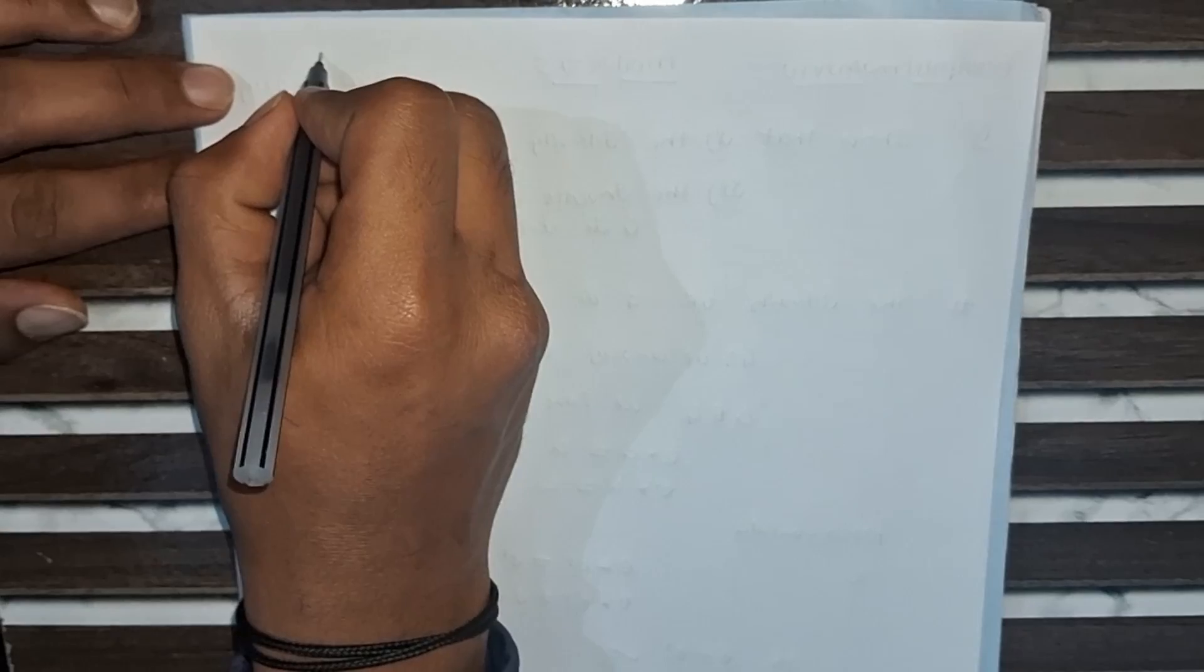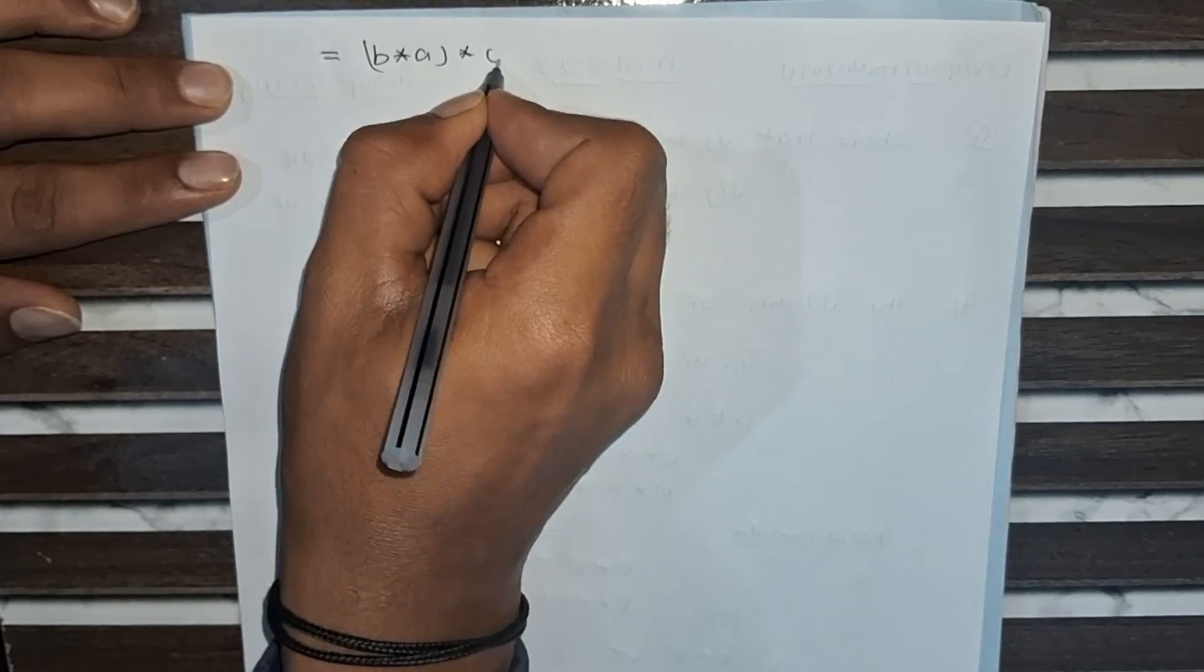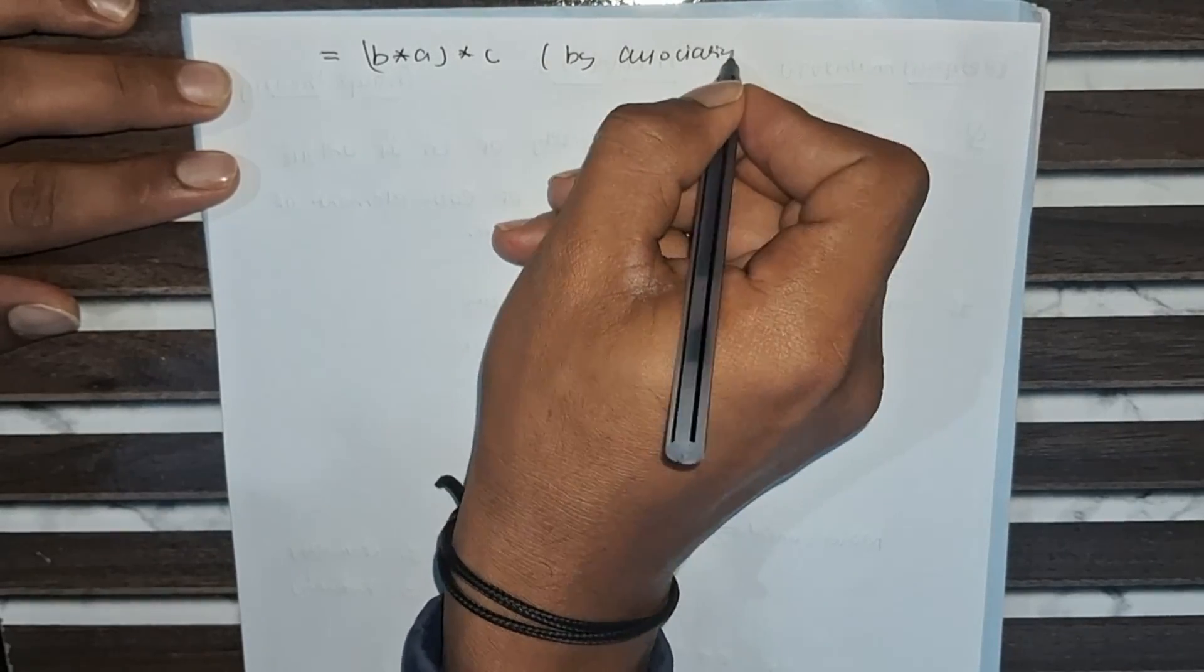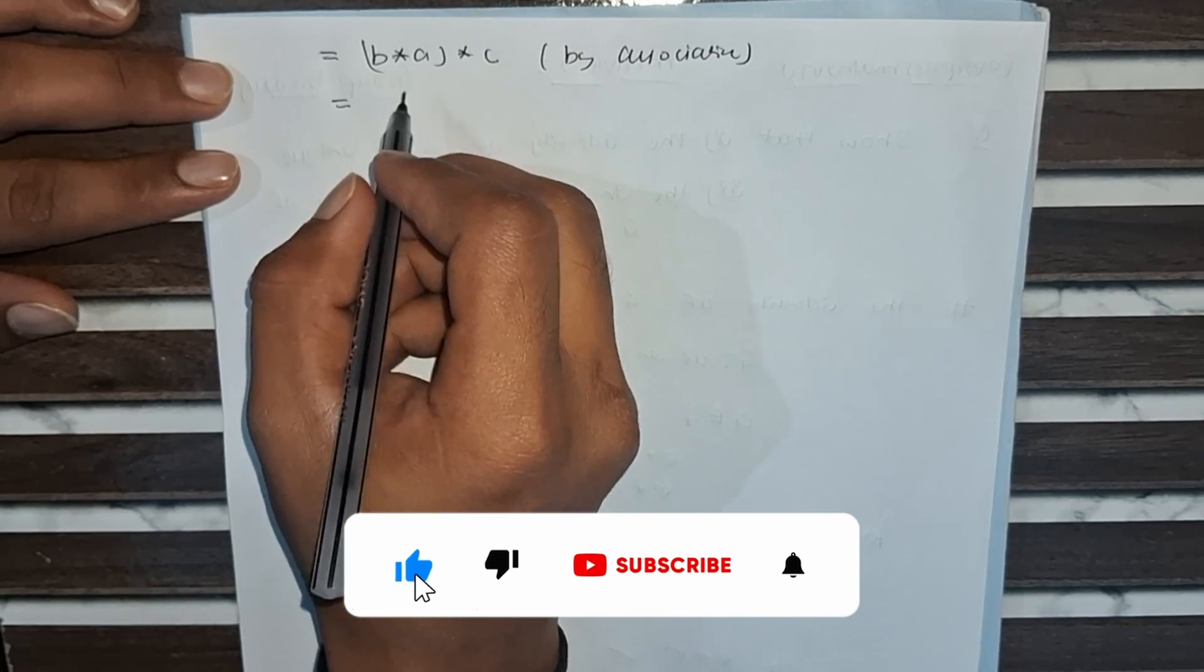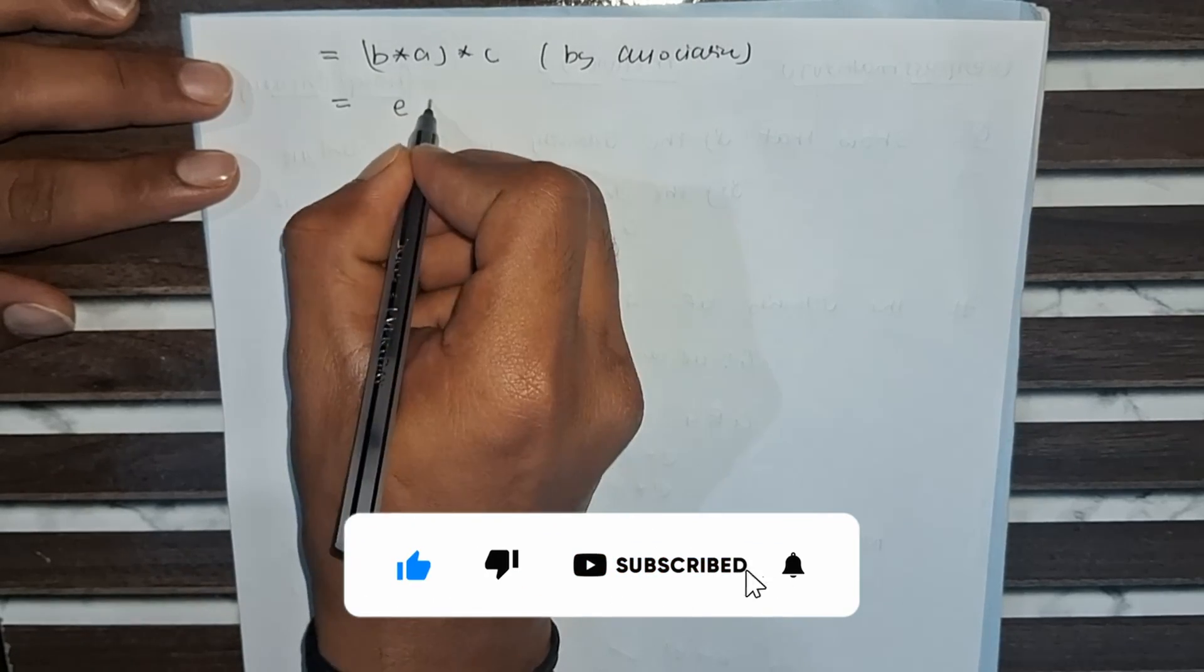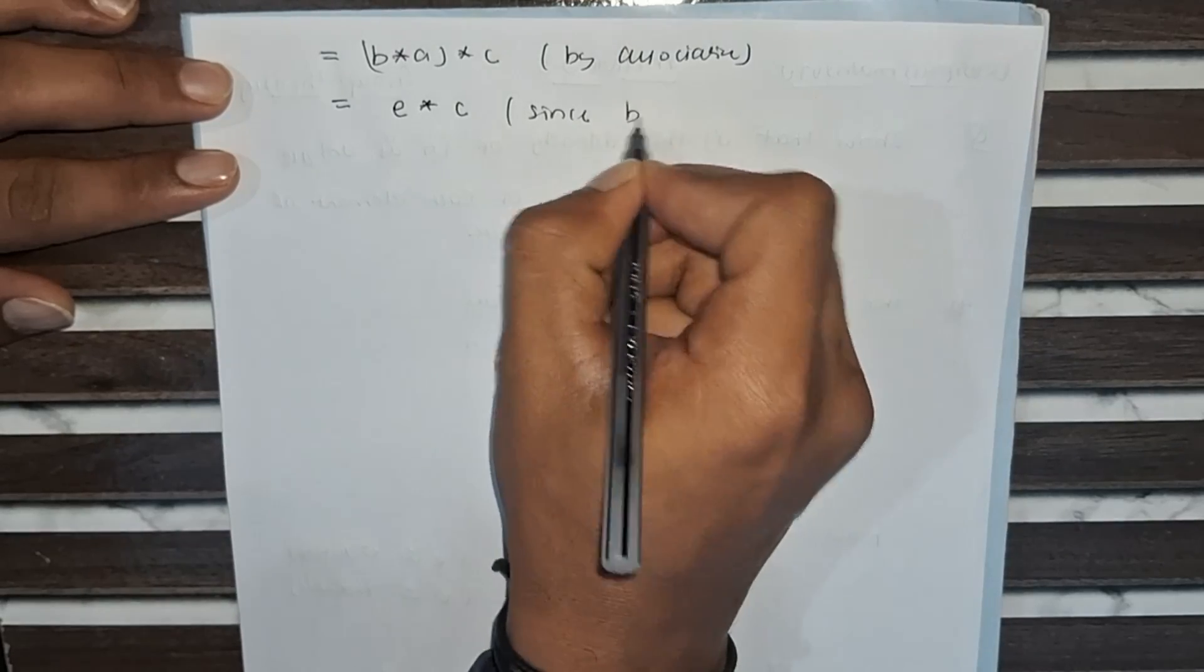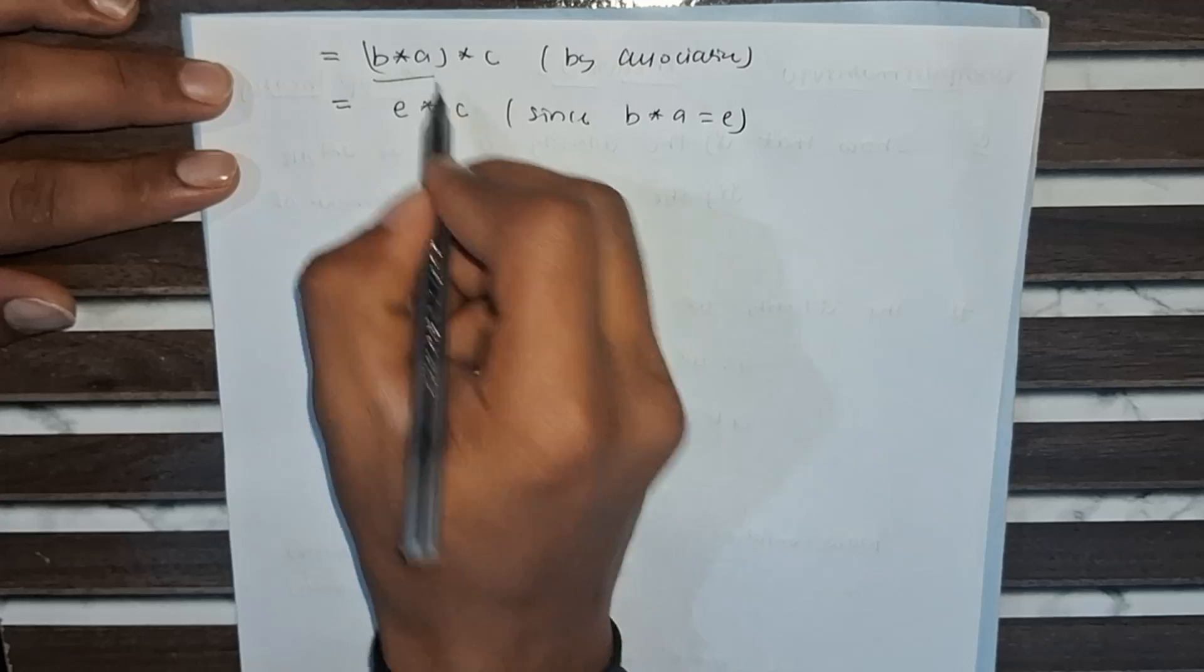This equals B times (A times C) by associativity. What is the value of B times A? B times A equals E. Since B times A equals E, in place of B times A we put E.